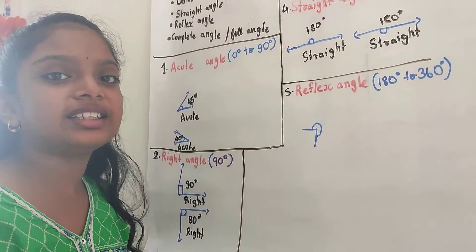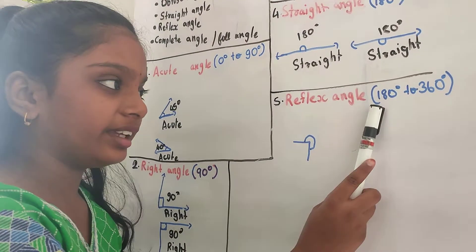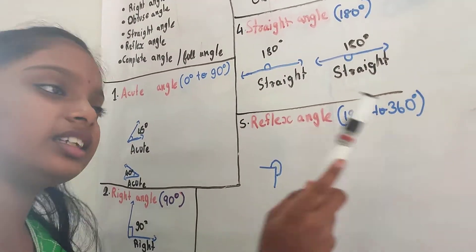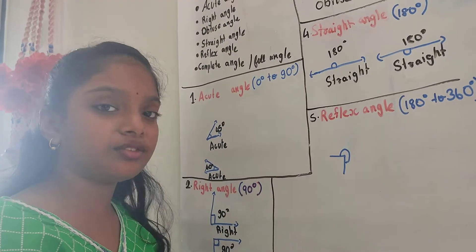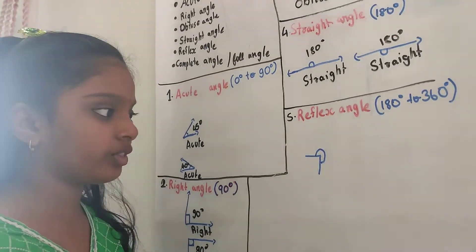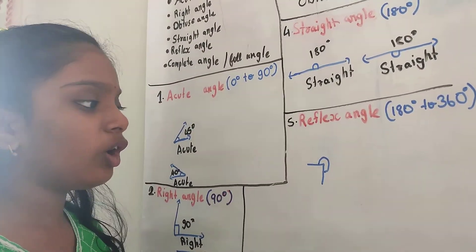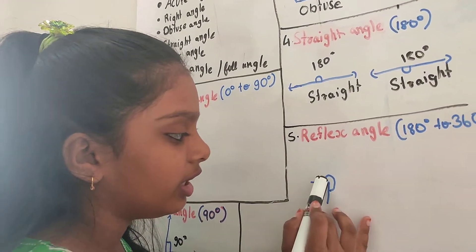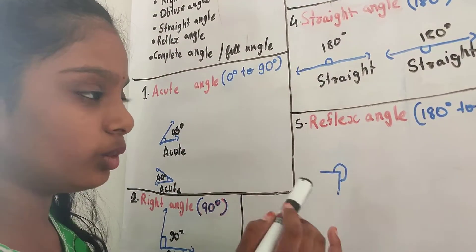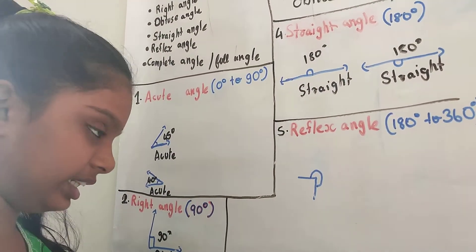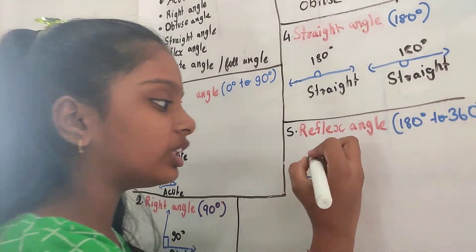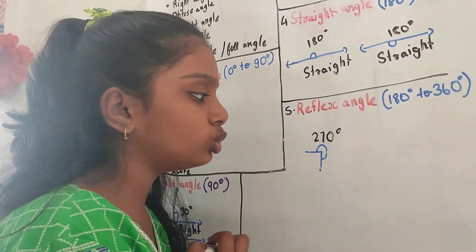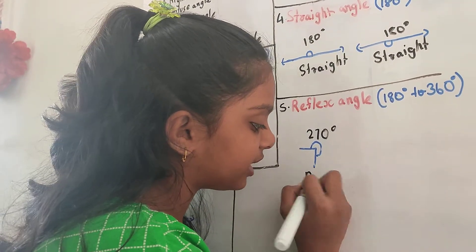The reflex angle is the angle which is between 180 degrees to 360 degrees. Do not think of this as a 90 degree angle — it is between 180 and 360 degrees. So, it is 270 degrees. It is 270 degrees. It is a reflex angle.